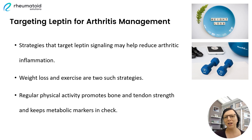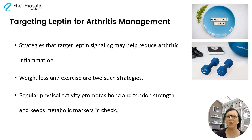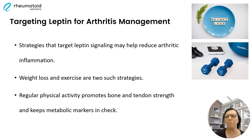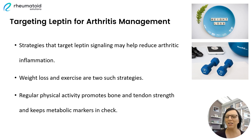So how can we influence our leptin levels? Well, here's the good news. We can incorporate strategies into our lifestyle which can help to improve our leptin levels, and two of the most important are weight loss and exercise. Shedding excess weight through a balanced and healthy diet and plenty of exercise can help to alleviate excess stress on the joints. Weight loss can also reduce the production of hormones and cytokines that can worsen arthritis symptoms. Regular physical activity, such as walking and other low impact exercises, can promote bone and tendon strength and help to keep metabolic markers in check.